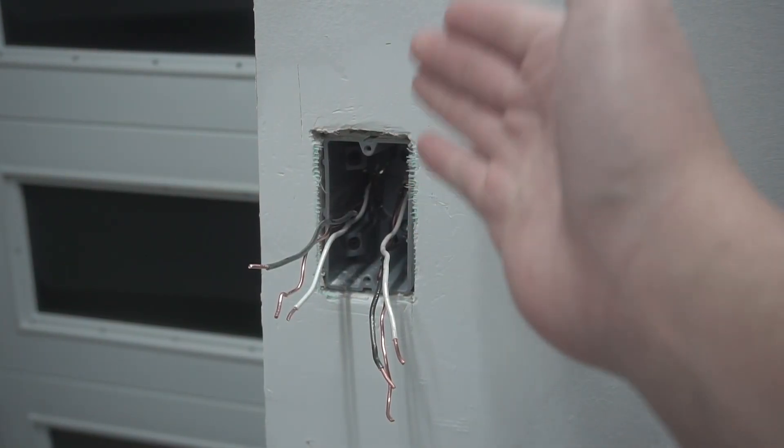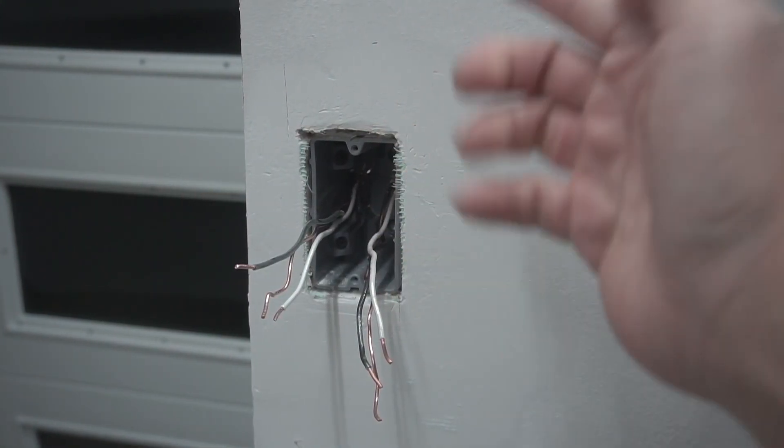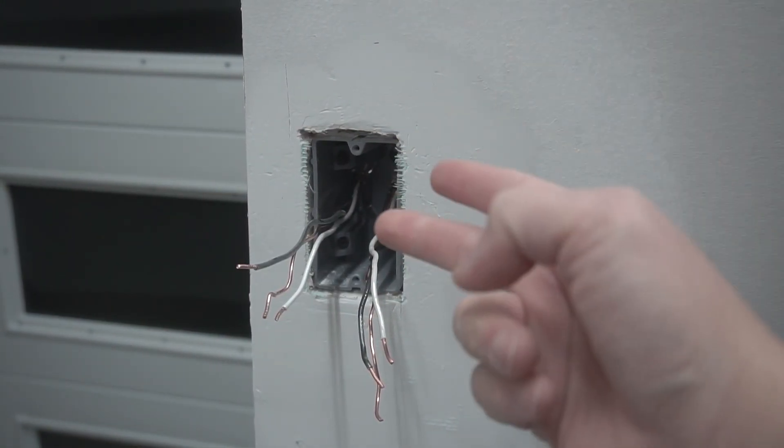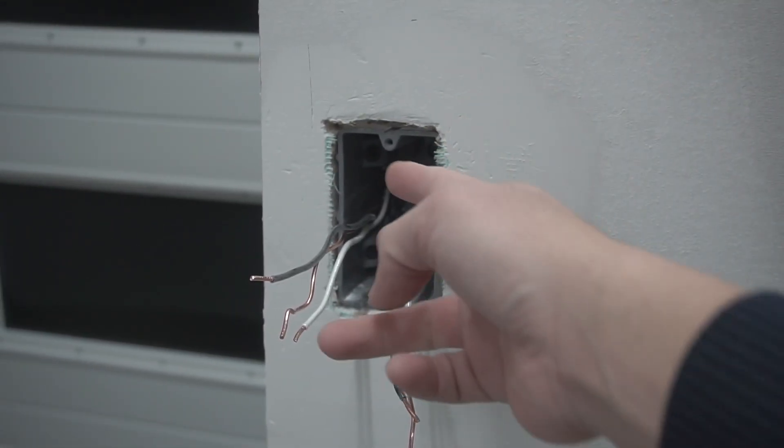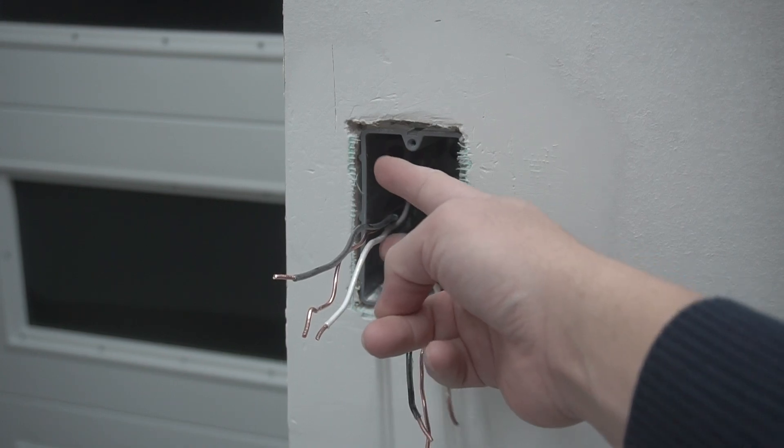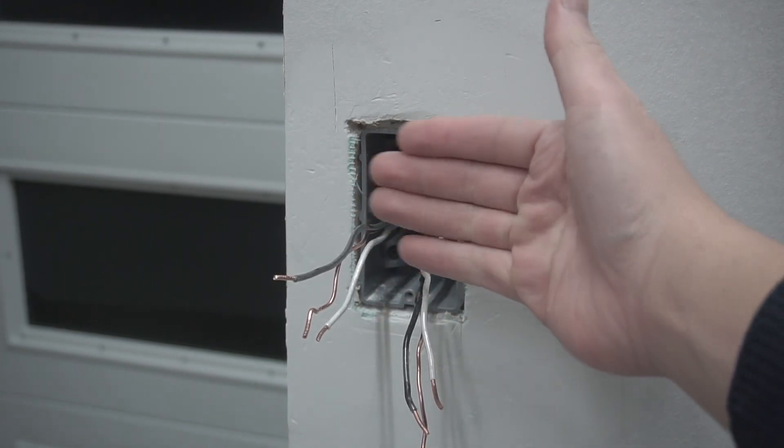We're going to have to take out this one gang J box out and we're going to have to replace it with this double. So in that situation, we're going to have to figure out how we're going to take this off. So there's two types of J boxes that you can possibly run into. One is the old work, which is this one screwed by two screws right here. This is old work. This is the adjustable kind.